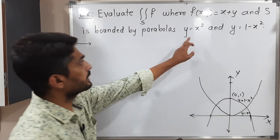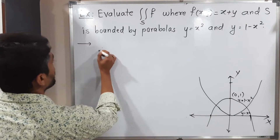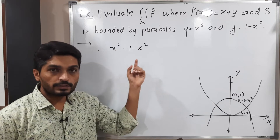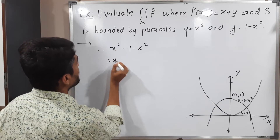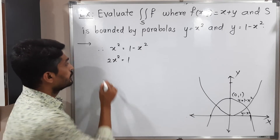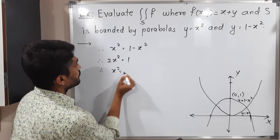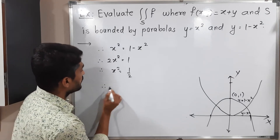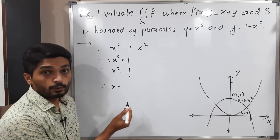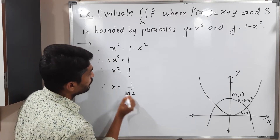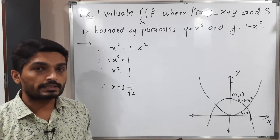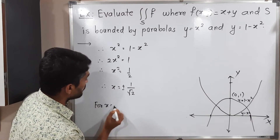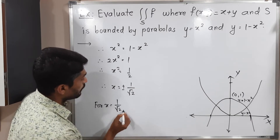Putting y = x² into the second equation gives x² = 1 − x², so 2x² = 1, therefore x² = 1/2. Taking square roots, x = ±1/√2.